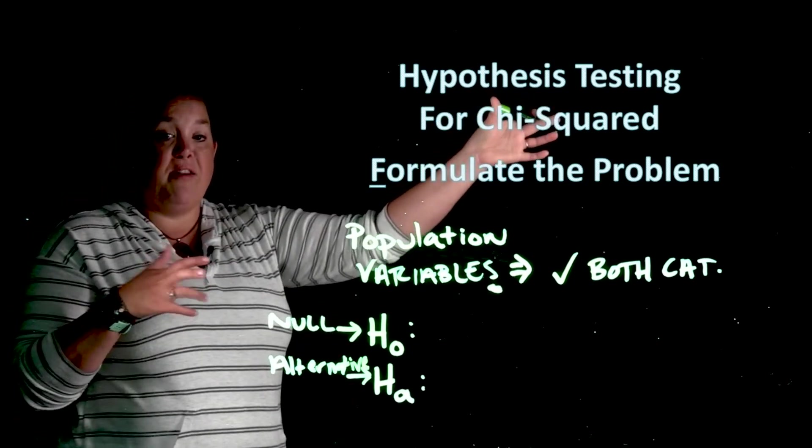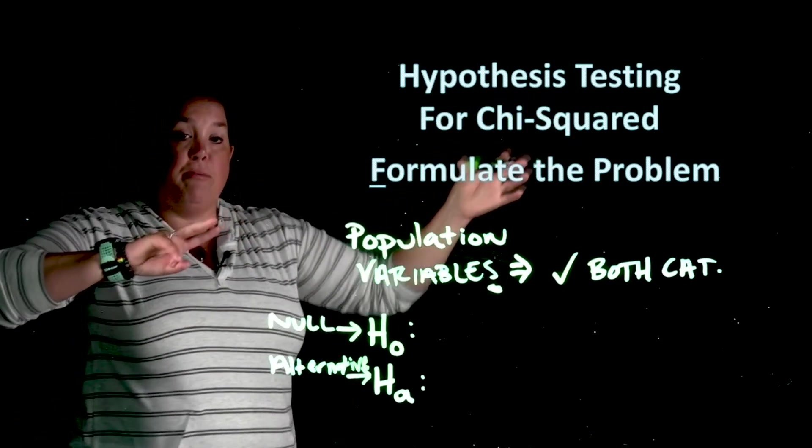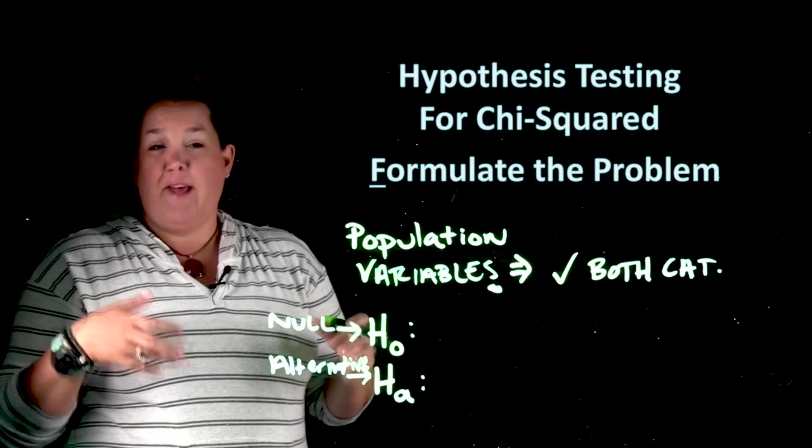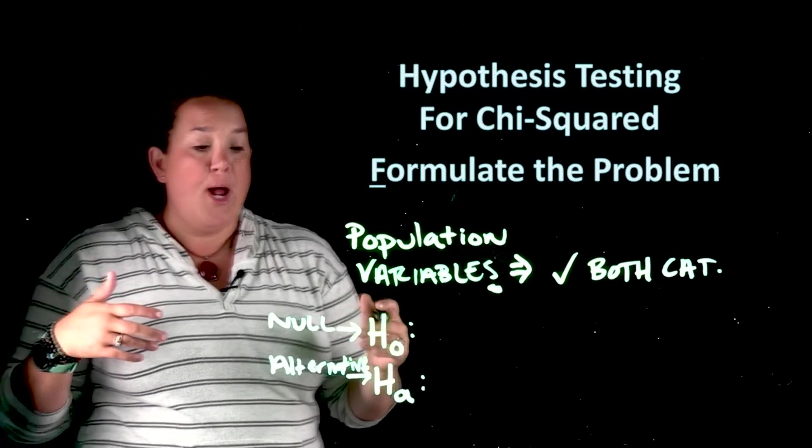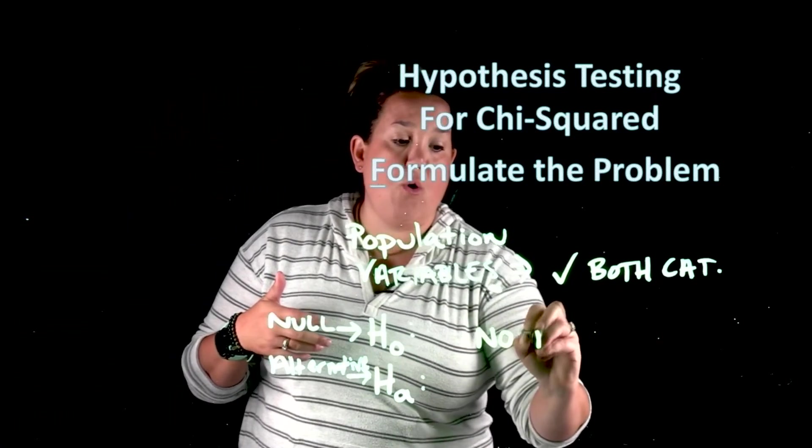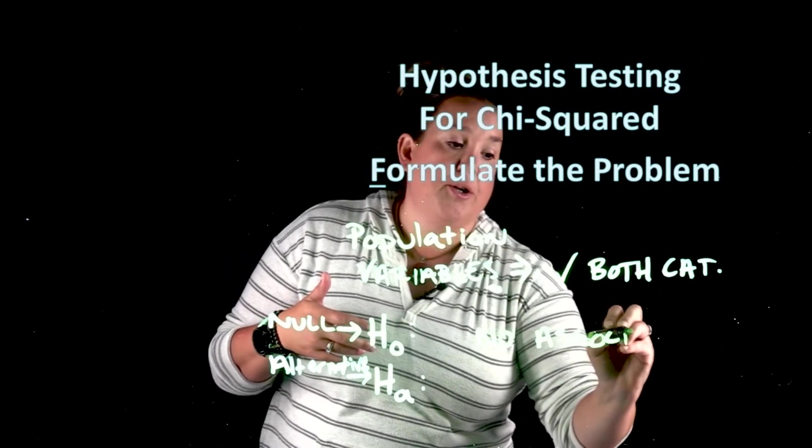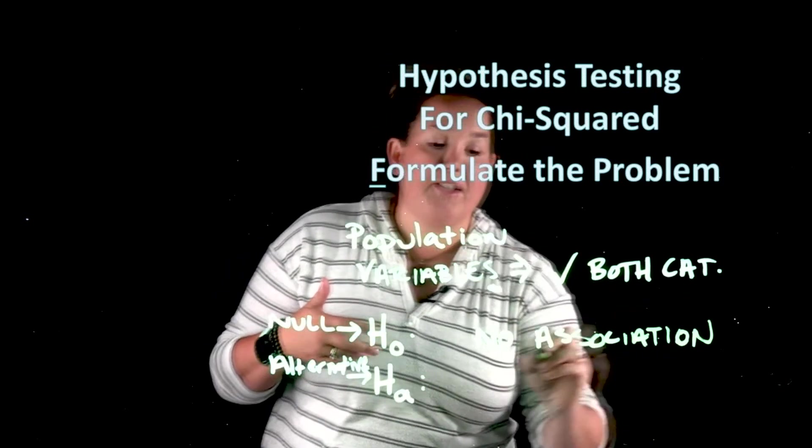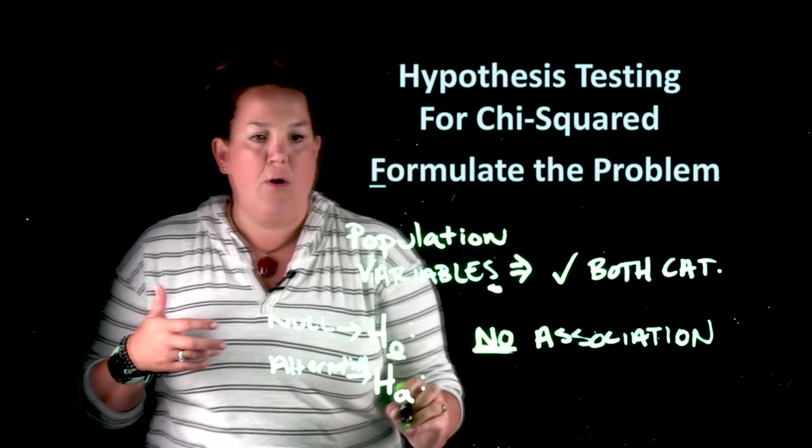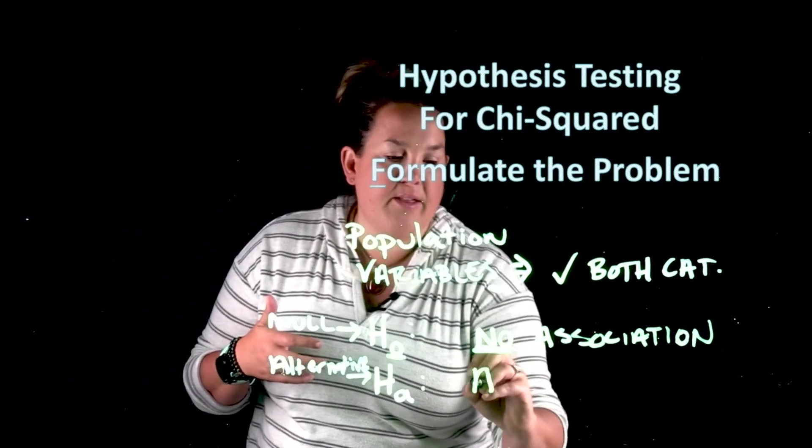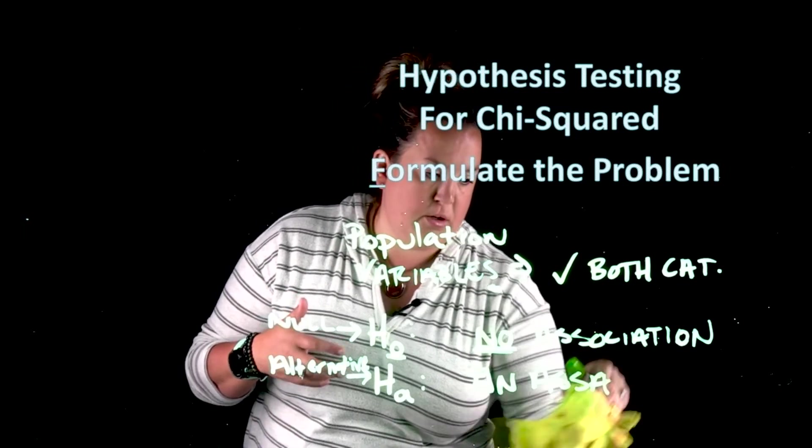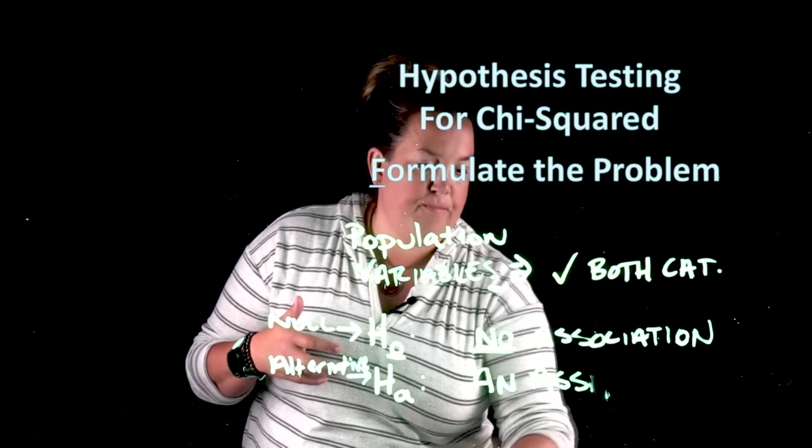With this, because we're doing a hypothesis test for two categorical variables, what we're actually going to be interested in is if they're related or if there's an association between the two. Now, the null is always going to be that there's no association. Now, I always tell students, easy to remember, H sub O goes with no.